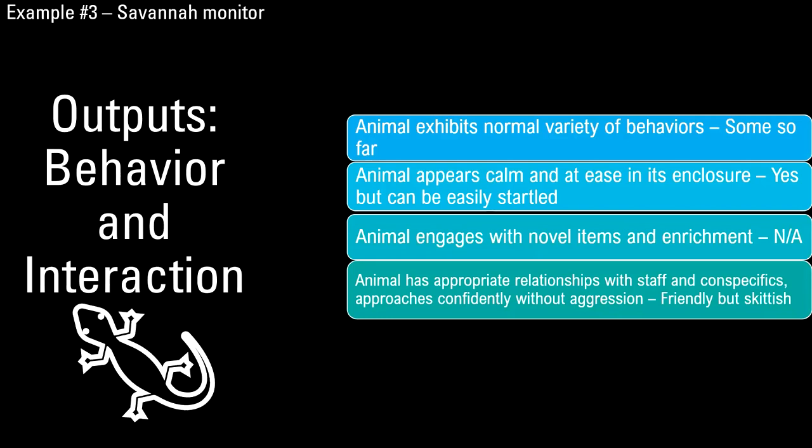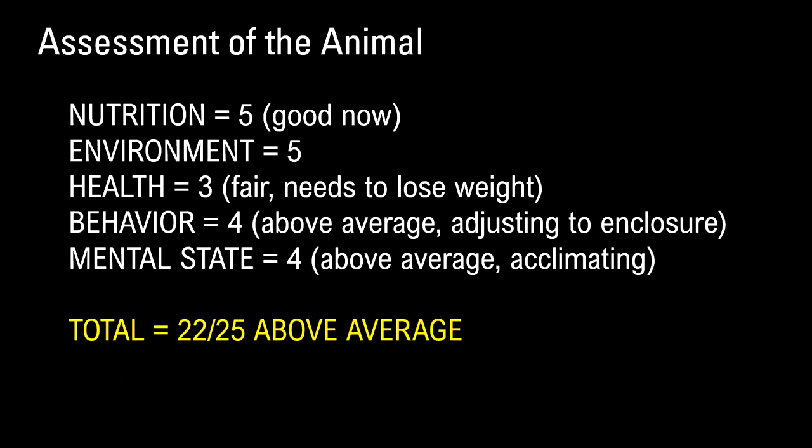Another output: it's starting to show a variety of behaviors — beginning to manipulate substrate, appears calm and at ease but easily startled. If it hasn't been outdoors before, that will be a change. You wouldn't be introducing additional stressors during the animal's acclimation period. It's generally friendly but a skittish individual.